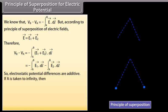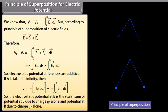If A is taken to infinity, then V equals the sum of minus the integral from infinity to B of E1 vector dot dL vector and minus the integral from infinity to B of E2 vector dot dL vector. So the electrostatic potential at B is the scalar sum of the potential at B due to charge Q1 alone and the potential at B due to charge Q2 alone. This result is applicable for any number of charges.